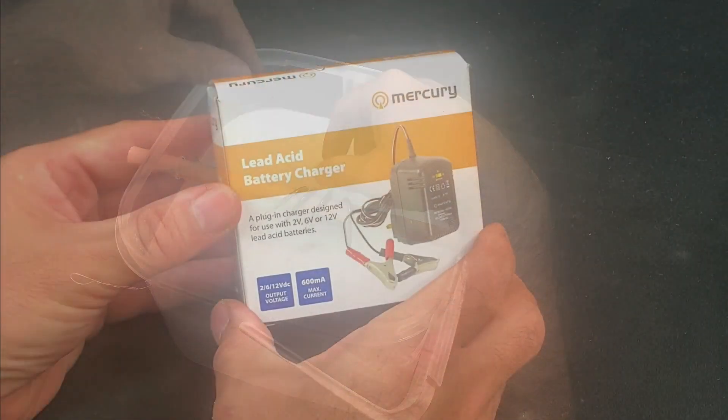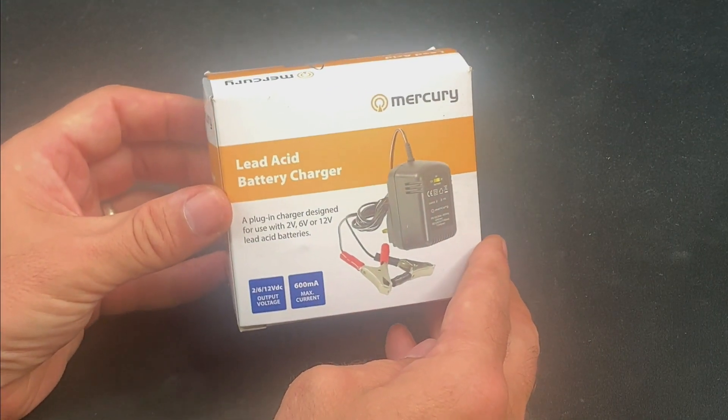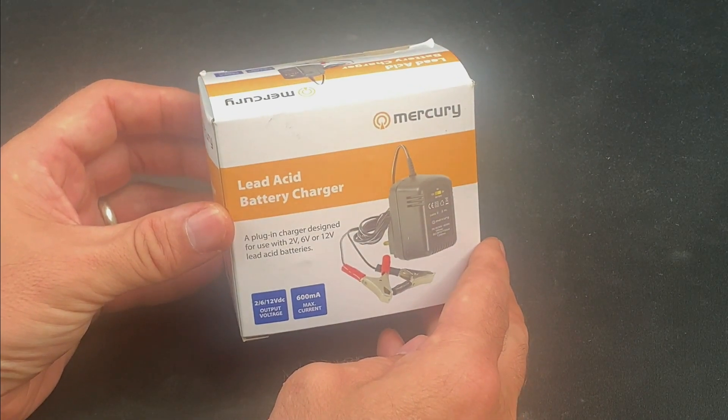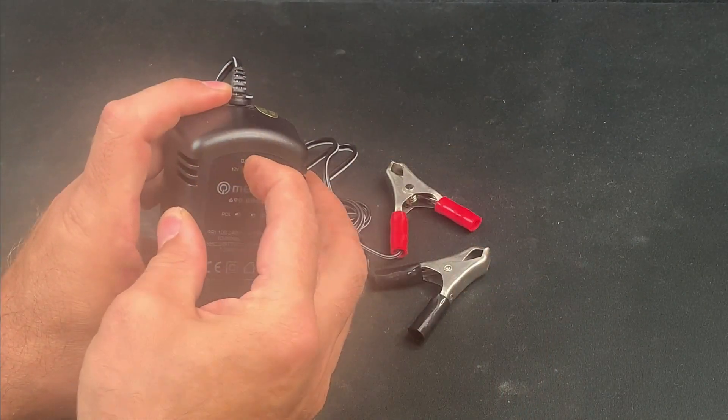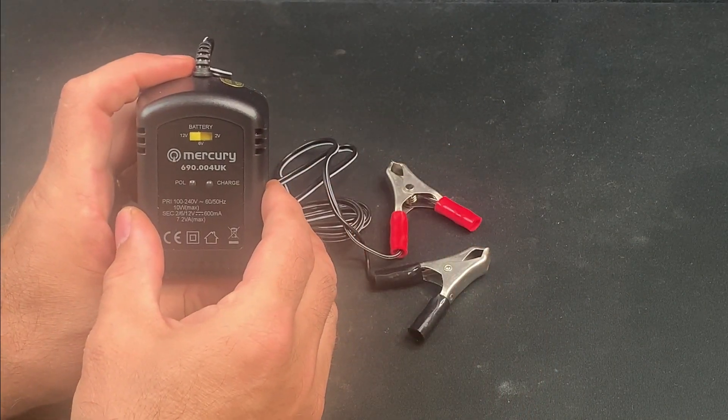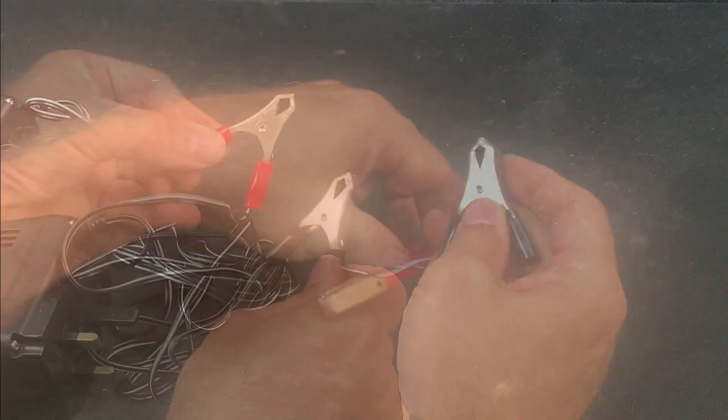And finally it's time to introduce an electrical current to get the party started. You can use a car battery trickle charger for this but I'm using a very simple lead acid battery charger for 2, 6 and 12 volt batteries and I'll be setting it to the 12 volt output option. Now this bit's important.